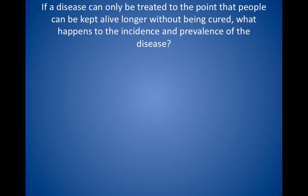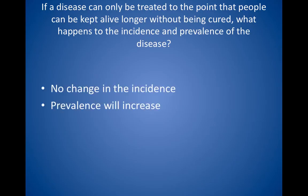If a disease can only be treated to the point that people can be kept alive longer without being cured, what happens to the incidence and prevalence of the disease? This is the classic question about incidence and prevalence on the Step 2 exam. Nothing happens to the incidence — the same number of people contract the disease every year — but the prevalence will increase because people with the disease live longer. In short-term diseases, such as influenza, the incidence may be higher than the prevalence, whereas in chronic diseases, such as diabetes or hypertension, the prevalence is greater than the incidence.